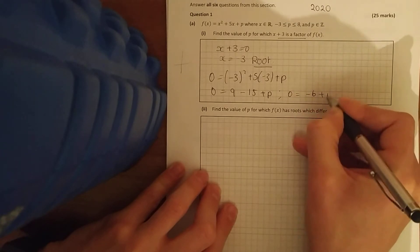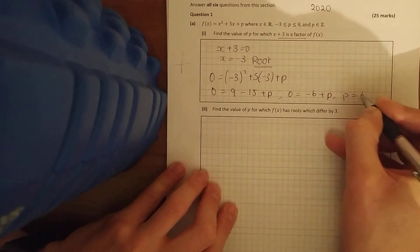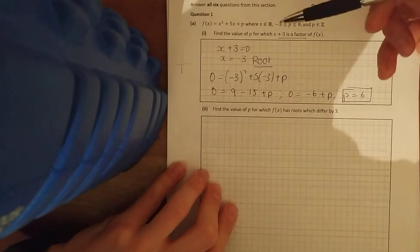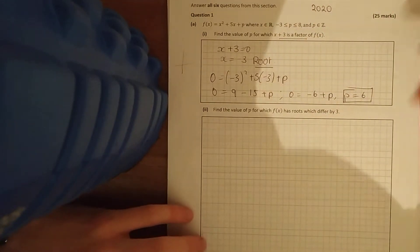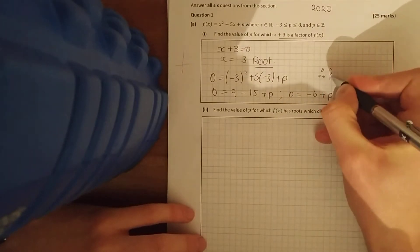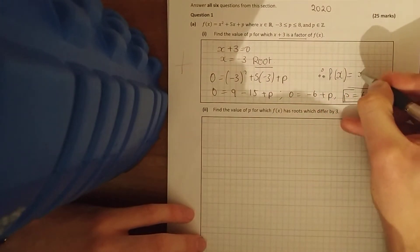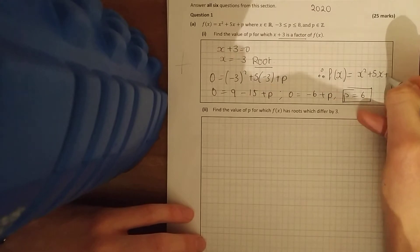p equals 6. Alternatively you could have done long division into that and it should work out to be the same. So that means my function in this part one, f of x equals x squared plus 5x plus 6.